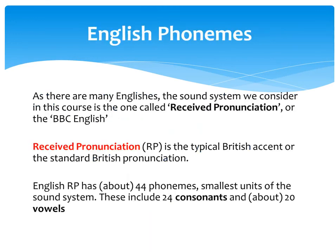English phonemes. We have many varieties of English — we have Cockney, Welsh, and Scottish accents. The one we consider in this course is called Received Pronunciation, or BBC English, which is the typical British accent or the standard British pronunciation. English Received Pronunciation has about 44 phonemes — the smallest units of the sound system — and these include 24 consonants and about 20 vowels.